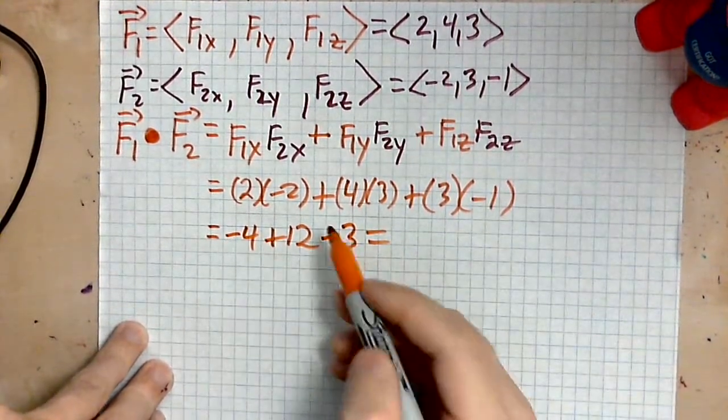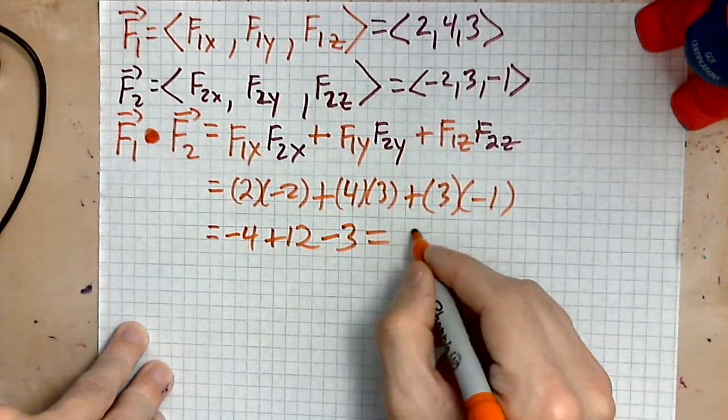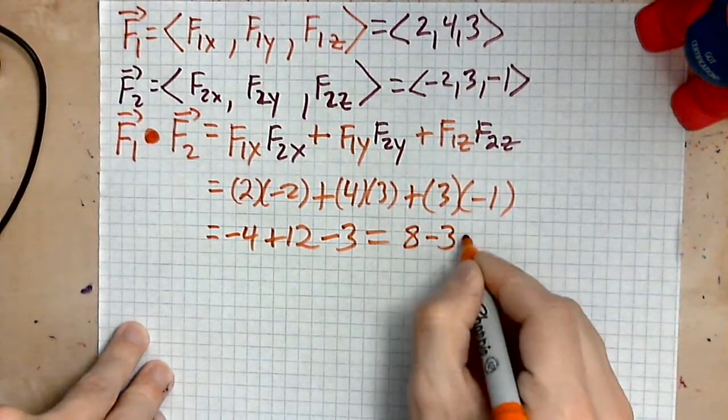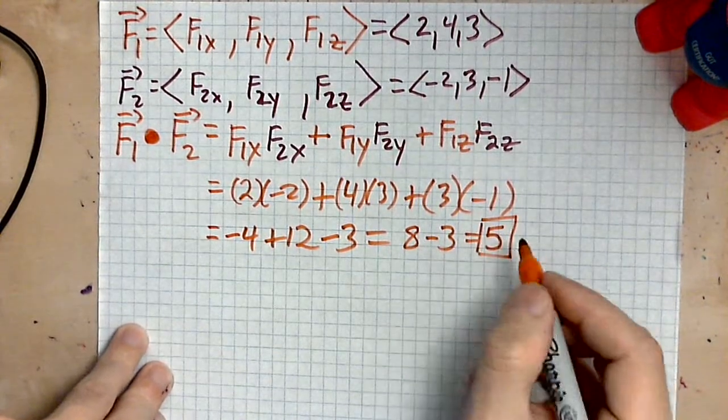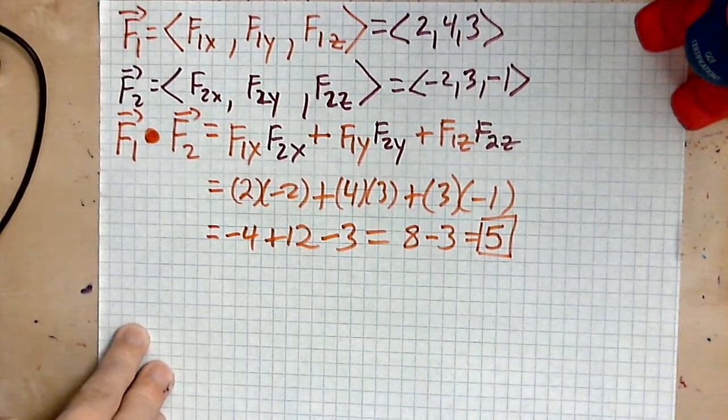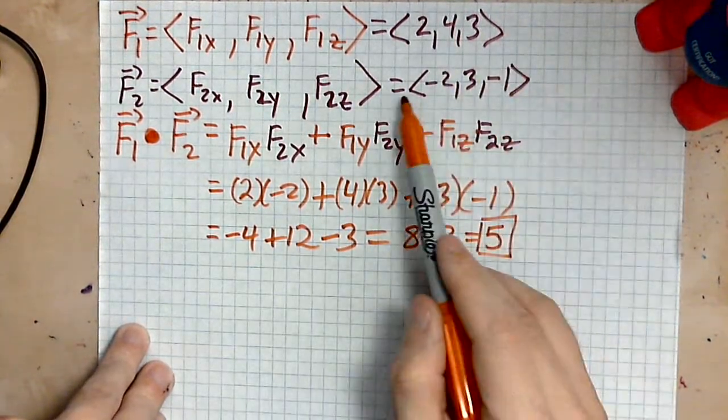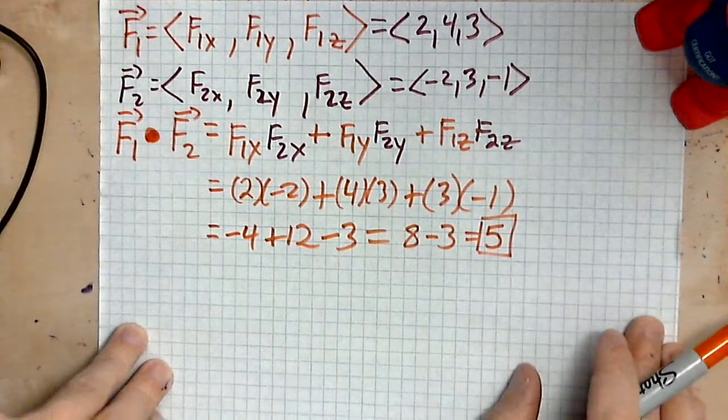We have negative 4 plus 12, which is positive 8, minus 3, which is 5. So the dot product of F1 and F2, in the specific case that they are 2, 4, 3 and negative 2, 3, negative 1, that value is positive 5.